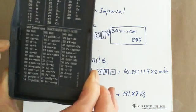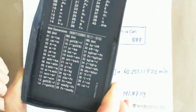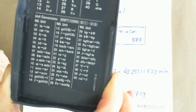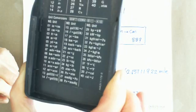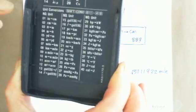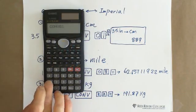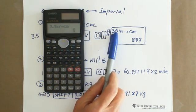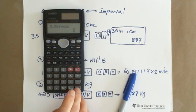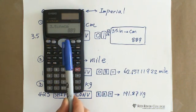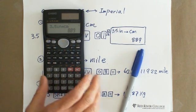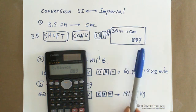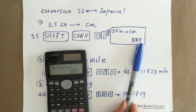For example, from inch to centimeter is 01. The first one is 01. You hit 01. On the screen, they instantly show you 3.5 inch to centimeter. Then you hit equal sign. They show you 8.89. That means 3.5 inch equivalent to 8.89 centimeter.